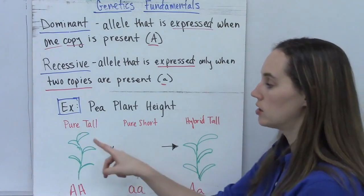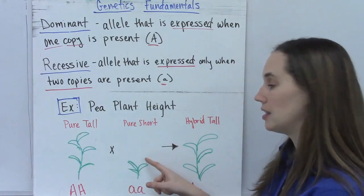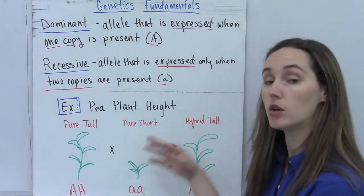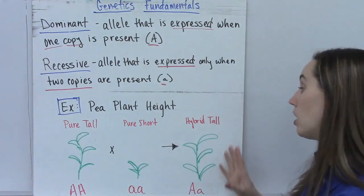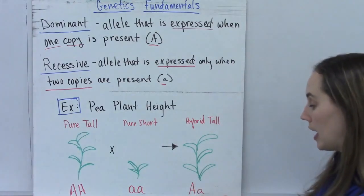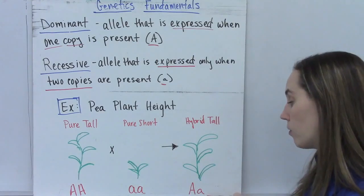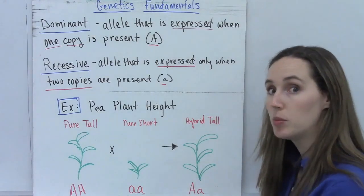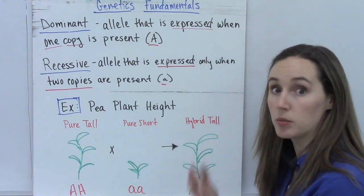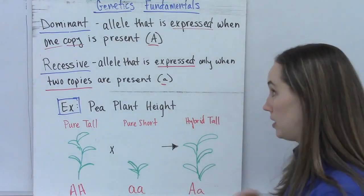My example here is looking at pea plant height. If I have a purebred tall plant and a purebred short plant, the gene for tall is dominant over the allele for short. And so your offspring are actually all going to be tall, even though they carry one copy of that allele. But you're not going to see it as short because this recessive allele is repressed by the dominant one.